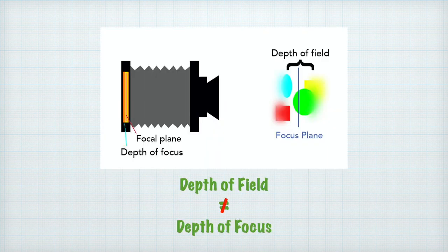One of my pet peeves is when people say 'depth of focus' when they really mean 'depth of field.' As we have seen, depth of field happens outside the camera at the subject plane. Depth of focus, on the other hand, happens inside the camera and is more about the precision needed in manufacturing — it is the range that the sensor can be in front of or behind the focal plane and still maintain focus. So please stop using the term when you really mean depth of field.